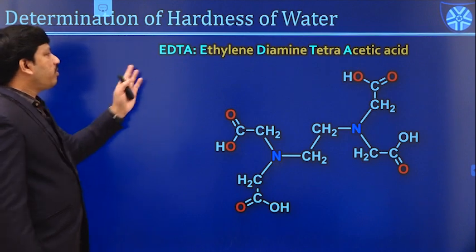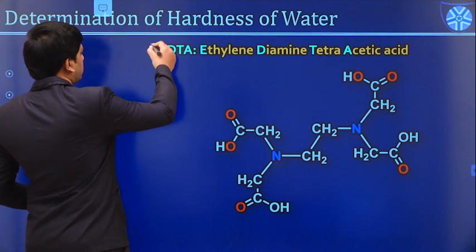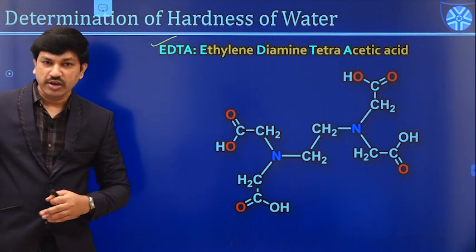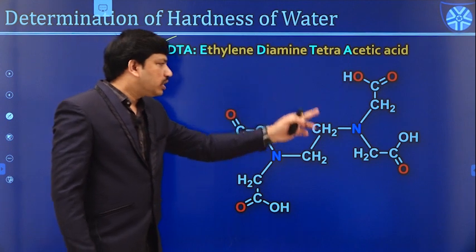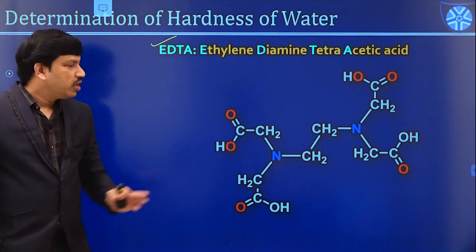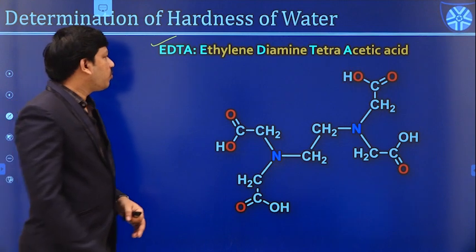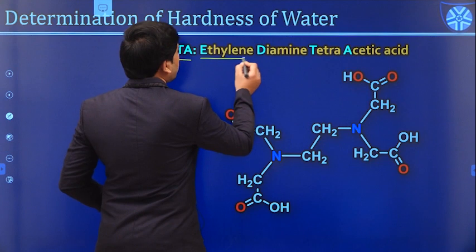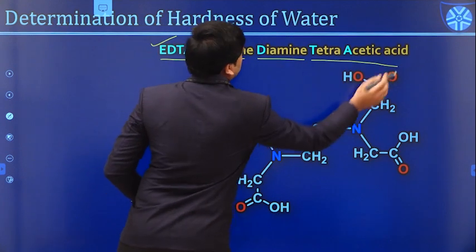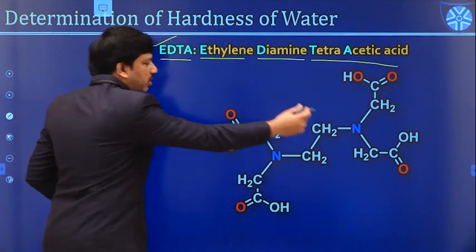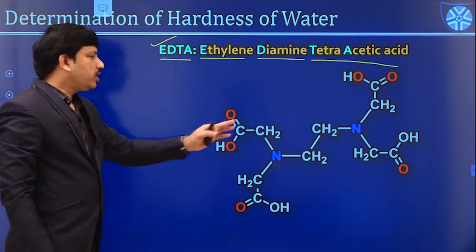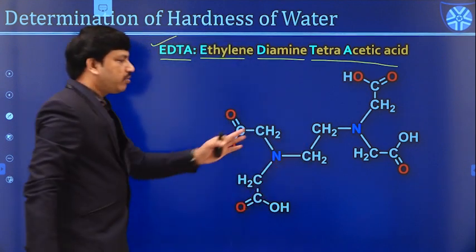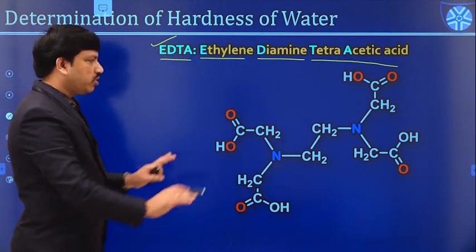Determination of hardness of water by EDTA titration method. What is EDTA, and why do we always determine hardness using EDTA titration? If you look at the structure of the EDTA molecule, you'll understand its importance. EDTA stands for ethylenediamine tetraacetic acid. It is an organic compound made up of only carbon, hydrogen, nitrogen, and oxygen.